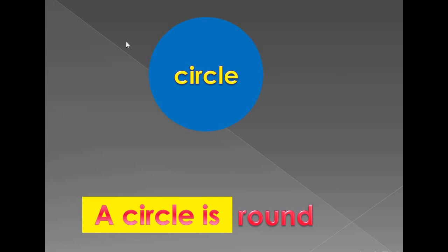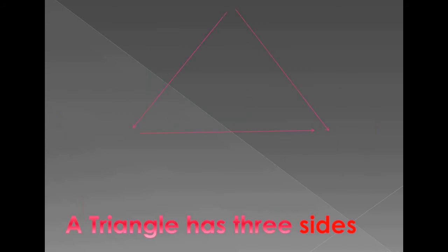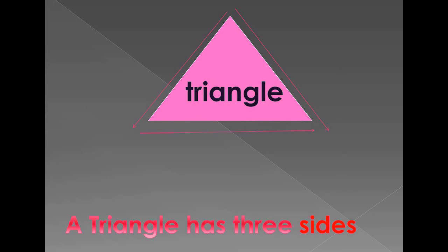A circle is round, like a ball and pizza. Do you like pizza? Triangle! A triangle has three sides.